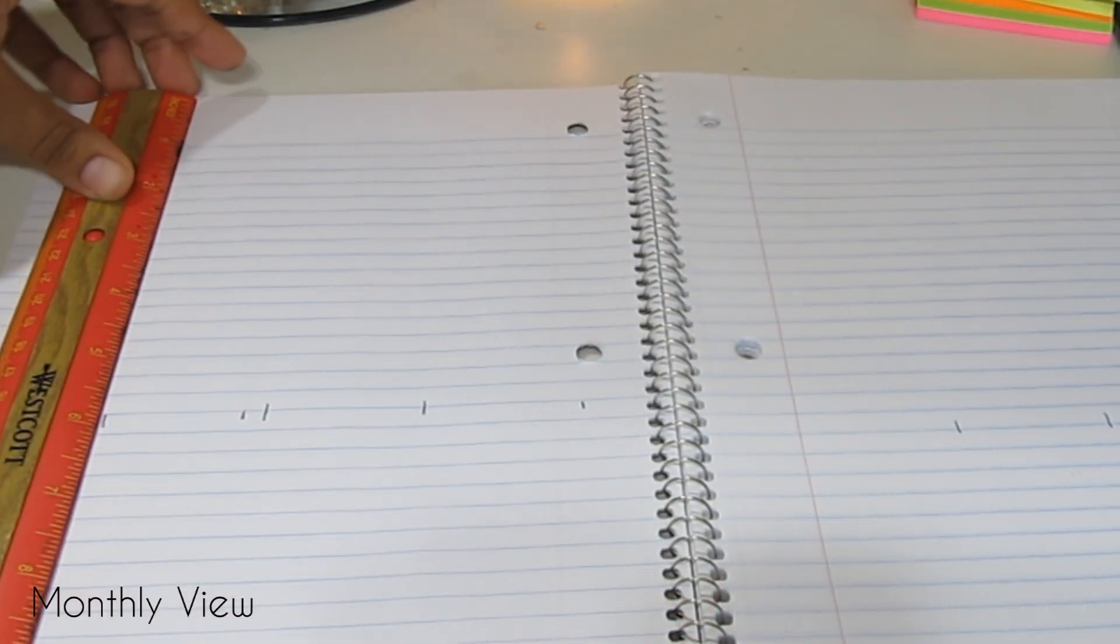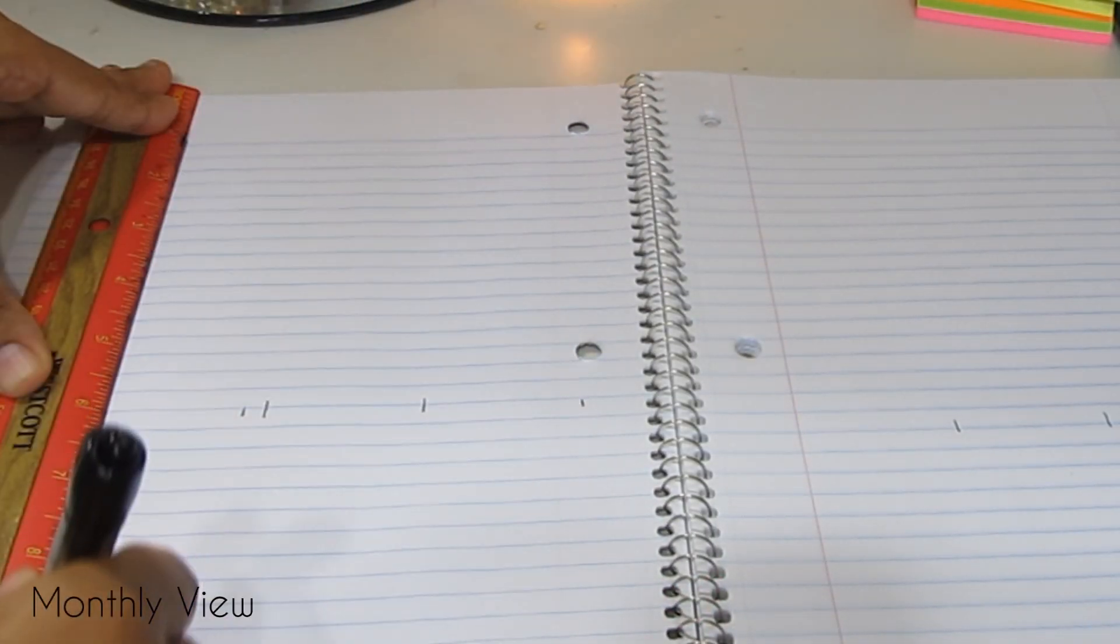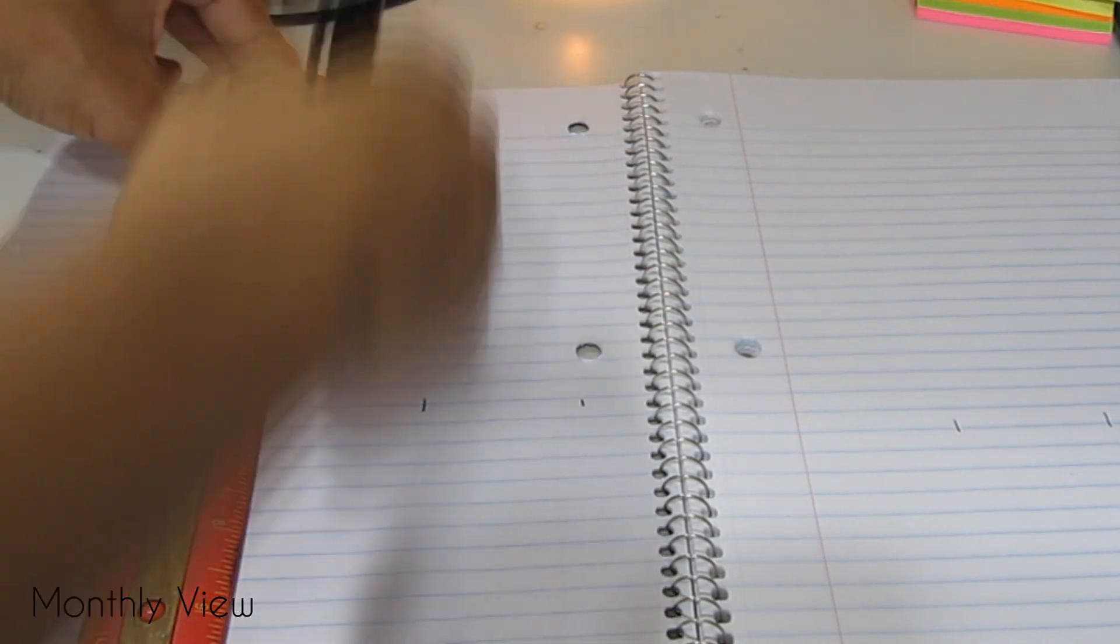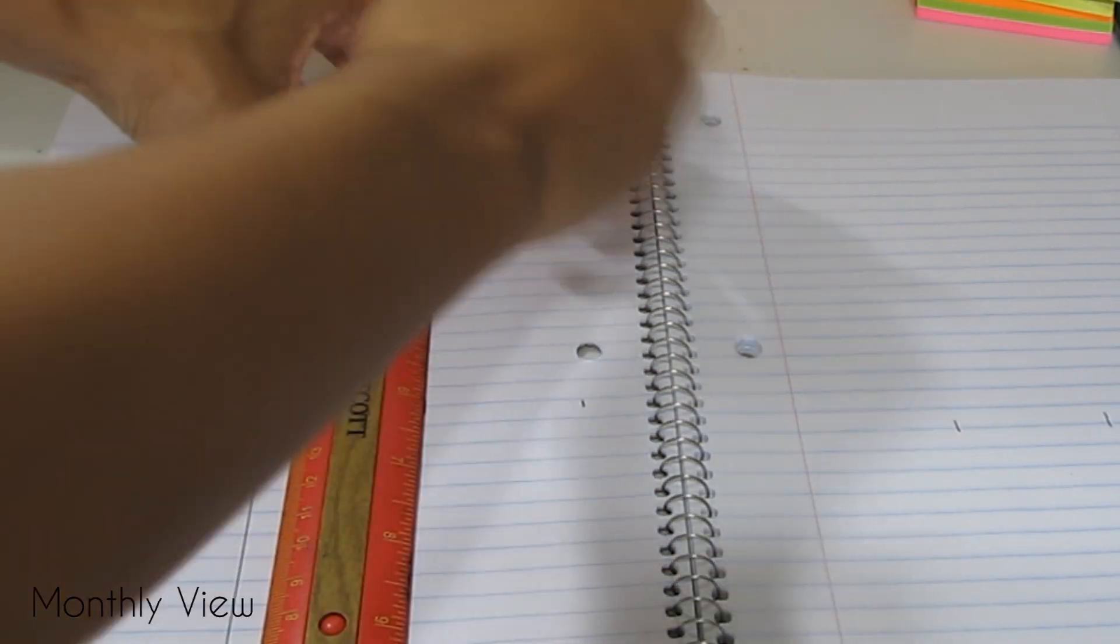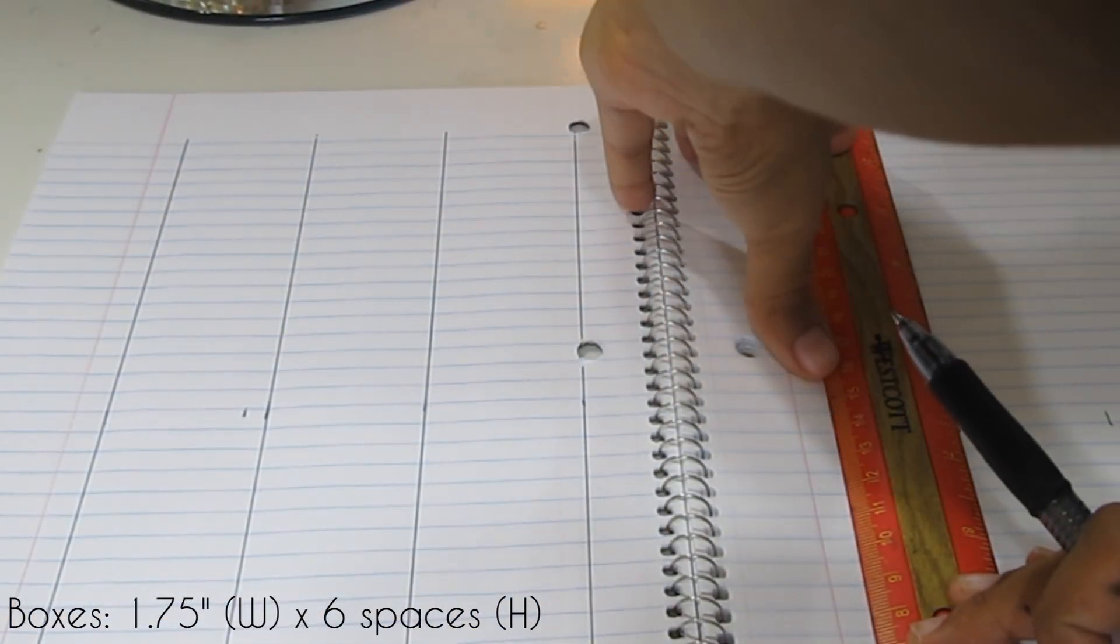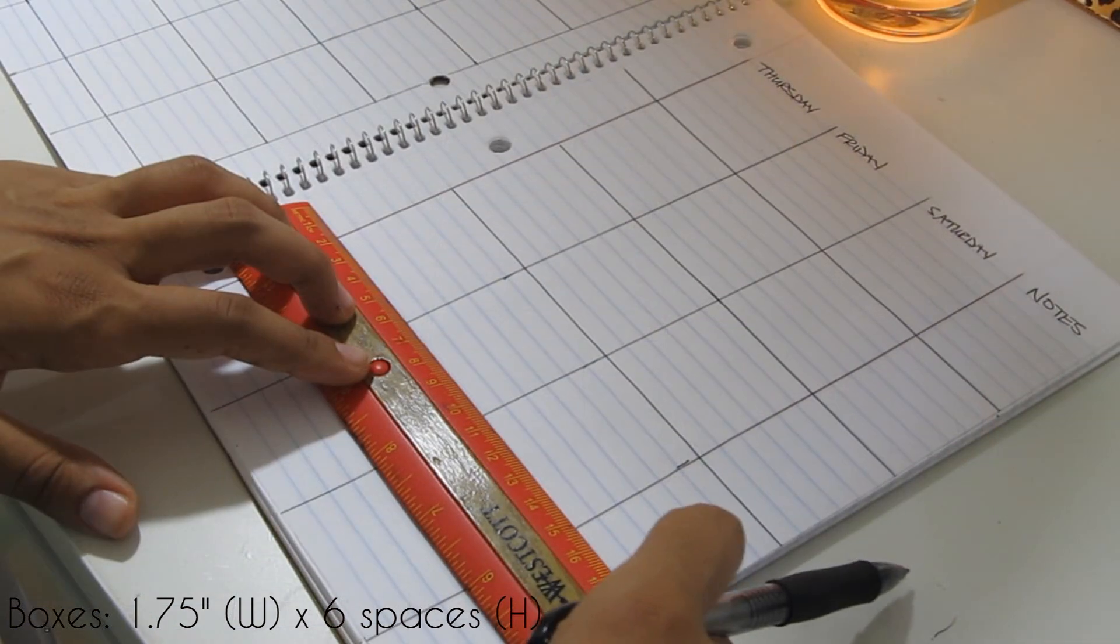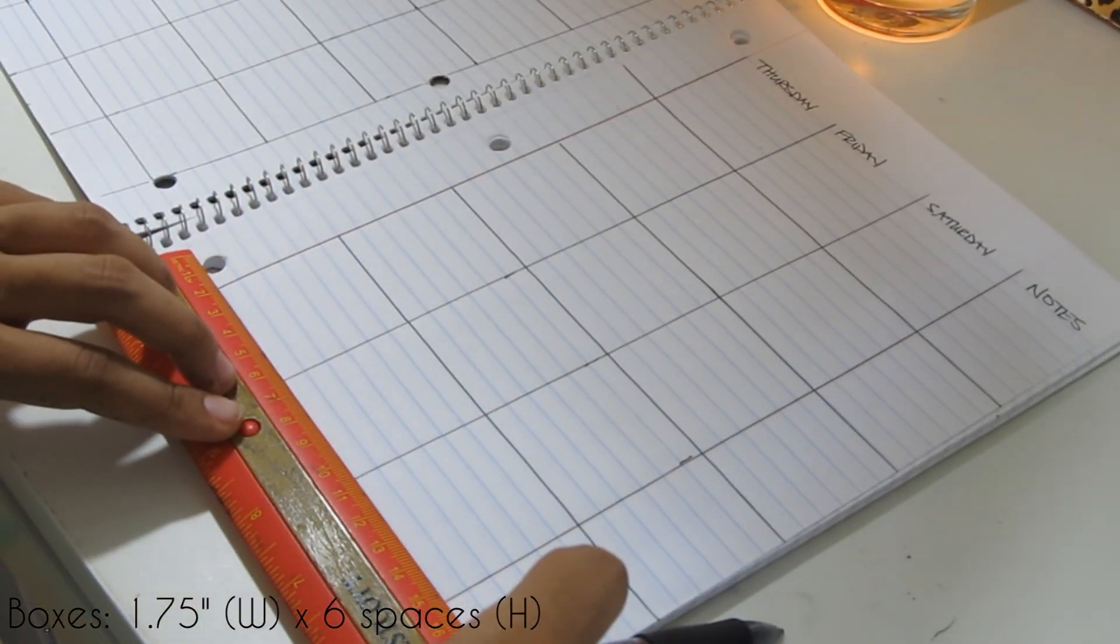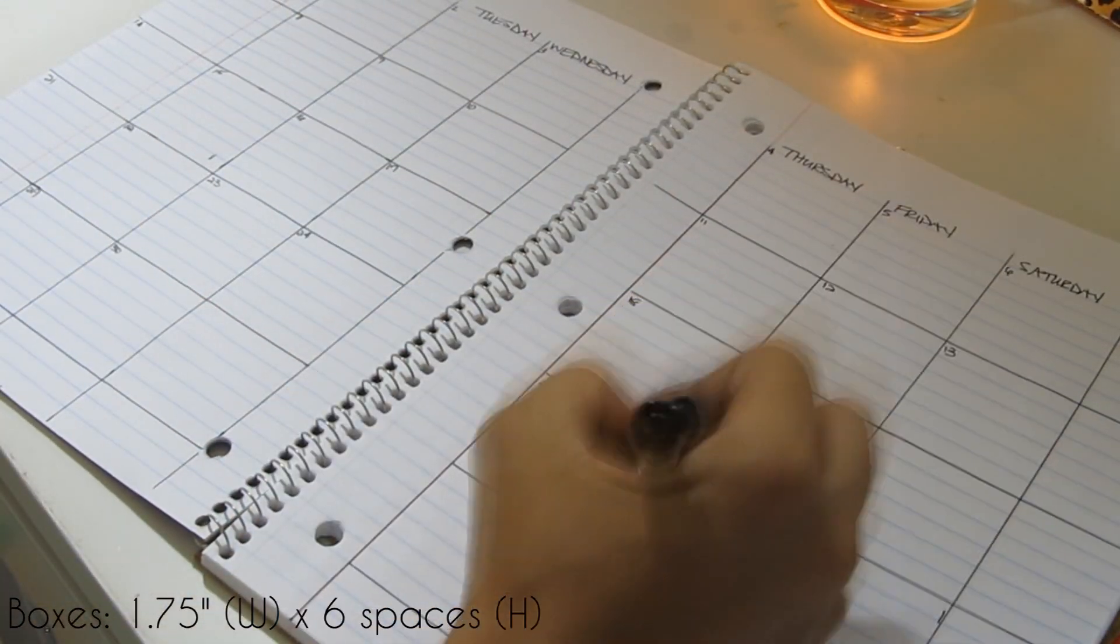I like to begin by making a monthly view calendar. The measurements I chose to do were 1.75 inches wide by 6 spaces high. You'll see what I mean in a minute. Once you get your boxes, fill in the numbers.